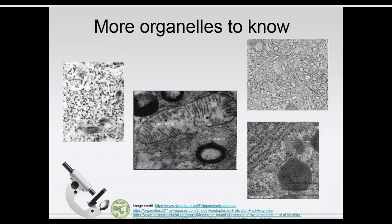Smooth ER, instead of producing proteins with ribosomes, has no ribosomes — the ribosomes are what make rough ER rough. Smooth ER is instead involved in lipid production, so we make fats and oils here. We can also have free ribosomes — ribosomes just floating around the cell not stuck to any ER. These also make proteins, but proteins that stay inside the cell, as opposed to membrane-bound ribosomes on the ER that make proteins transported to the Golgi for excretion out of the cell.